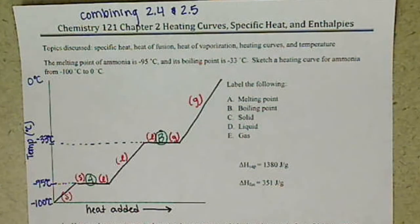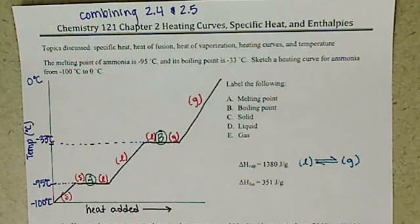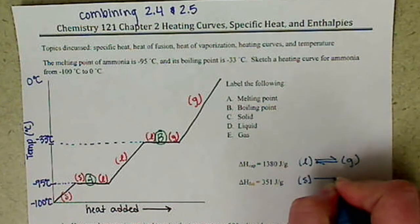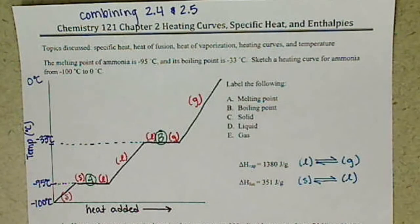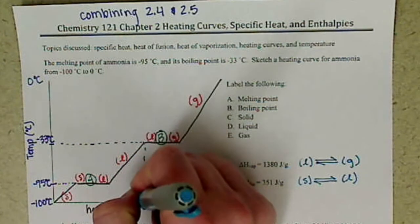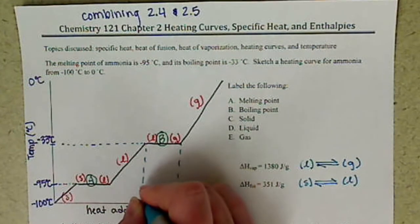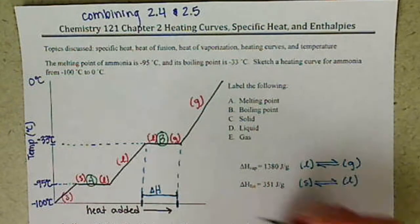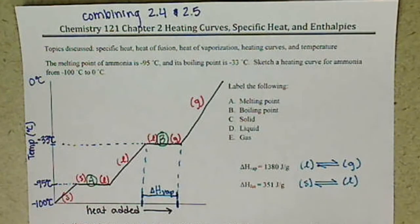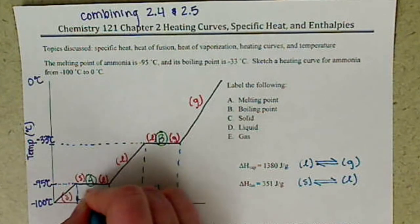Now we label the delta H of vaporization — that's the energy required to convert between liquid and gas. The amount of heat added to complete that transition is our delta H of vaporization, corresponding to the flat boiling line. Our delta H of fusion deals with the energy going between solid and liquid, and corresponds to the flat melting line.